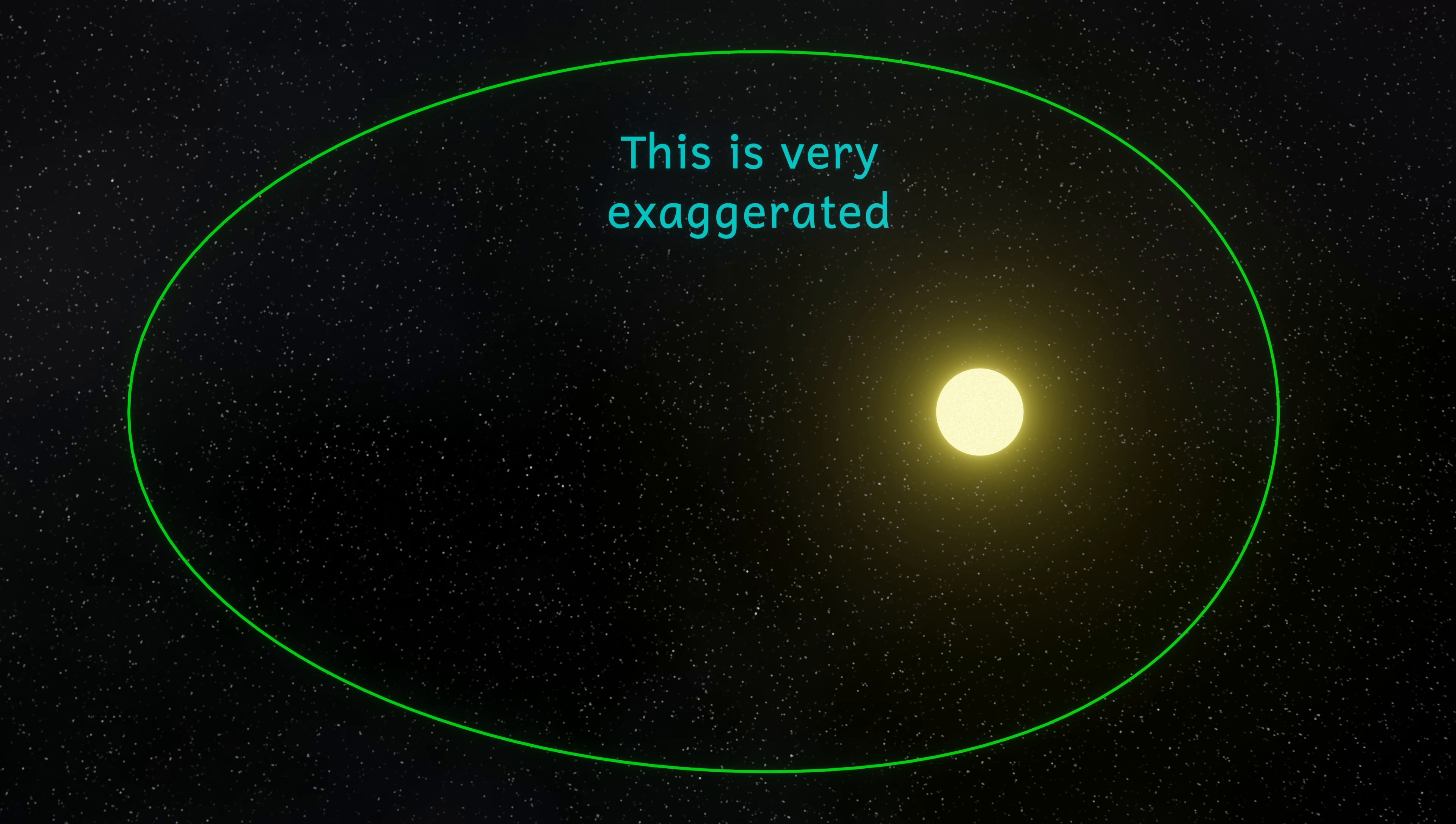So what has all this got to do with Mercury? The planets orbit the Sun, but their orbits aren't perfect circles. They're ellipses, as we can see here. When the planet is closest to the Sun, we call this the perihelion, and the point at which the planet is furthest away from the Sun is called the aphelion.